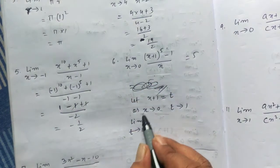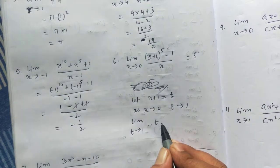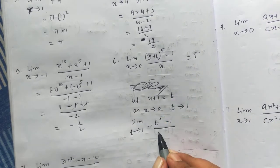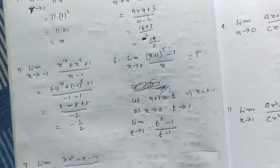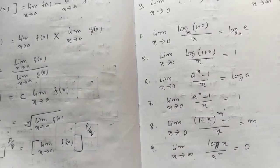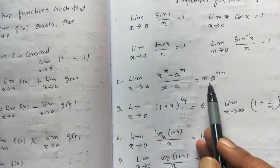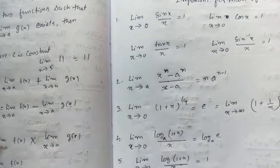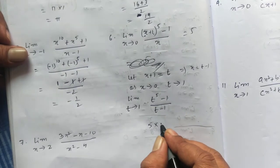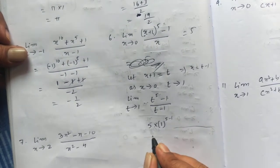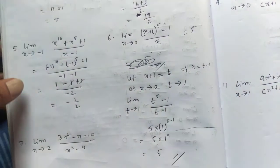Instead of x tends to 0, we're converting to t tends to 1. x + 1 is t, raised to the power 5 minus 1, divided by t minus 1 (since x = t − 1). We apply the formula xⁿ − aⁿ / (x − a) = n·aⁿ⁻¹. Here n is 5, a is 1, so we get 5 × 1⁴ = 5. You can write the value directly as 5.